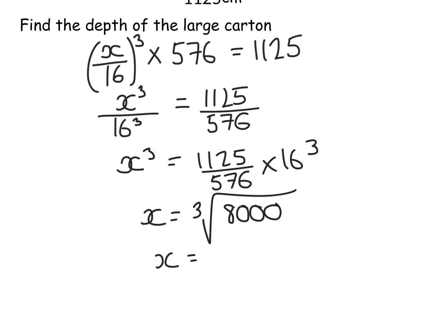So that gives me 8000. Now that was what x cubed was. So I'm going to do the cube root of that and the cube root of 8000. Well, we should know the cube root of 8. And the cube root of 8000 will be 20. So the missing side was 20 centimetres high.